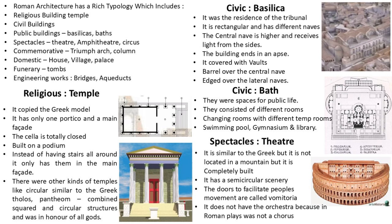Civic buildings like the basilica served as the residence of the tribunal. It is rectangular and has different naves — the central nave is higher and receives light from the sides, and the building ends in an apse. It featured a barrel vault over the central nave and groin vaults over the lateral naves. Civic baths were spaces for public life consisting of different rooms: changing rooms, rooms with different temperatures, a swimming pool, gymnasium and library.